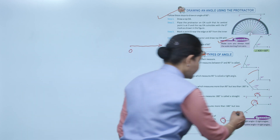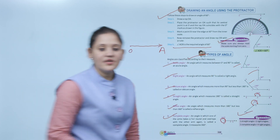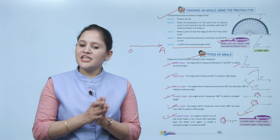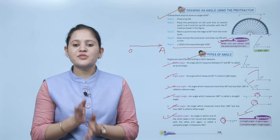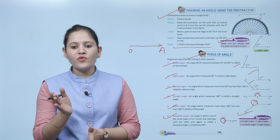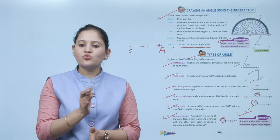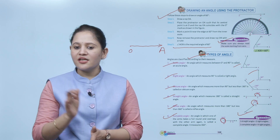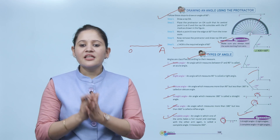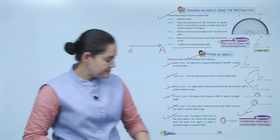Remember: one straight angle equals 2 right angles, because 180 degrees equals 90 plus 90 degrees. One complete angle equals 4 right angles.